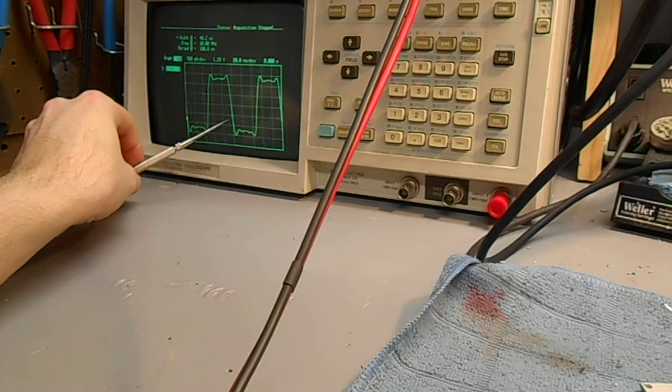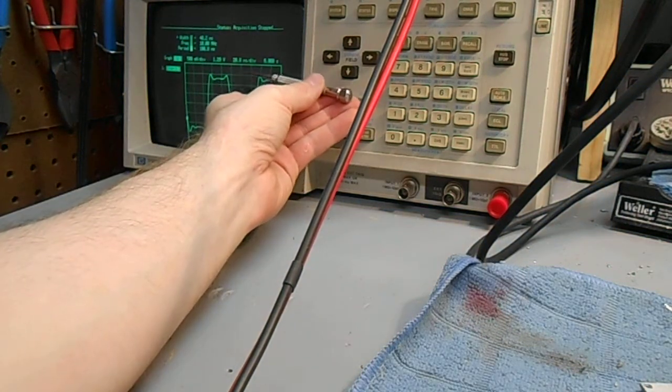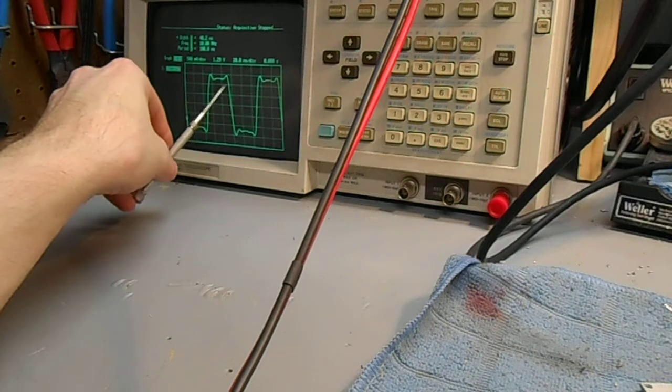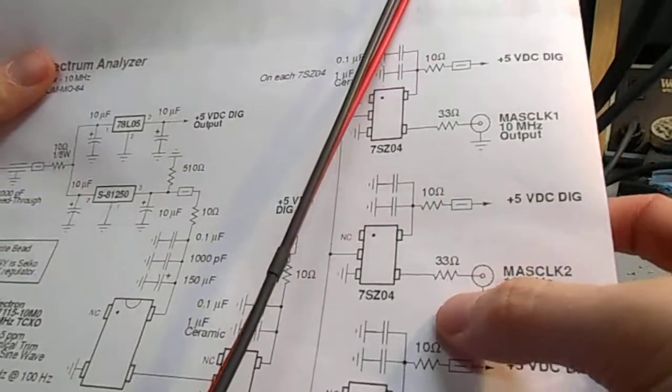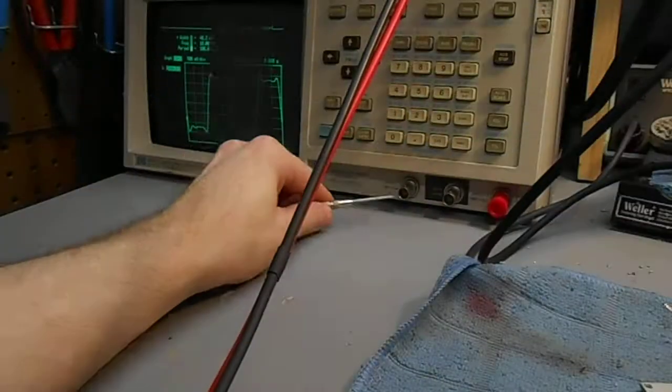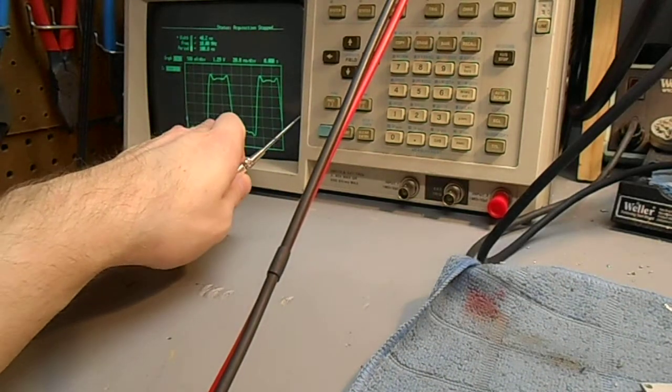This is 500 millivolts per division. You can see one volt, two volt, two and a half volts. This is because I have the scope terminated in 50 ohms. And so the series 50 ohms, shunt 50 ohms, essentially cuts our waveform in half.